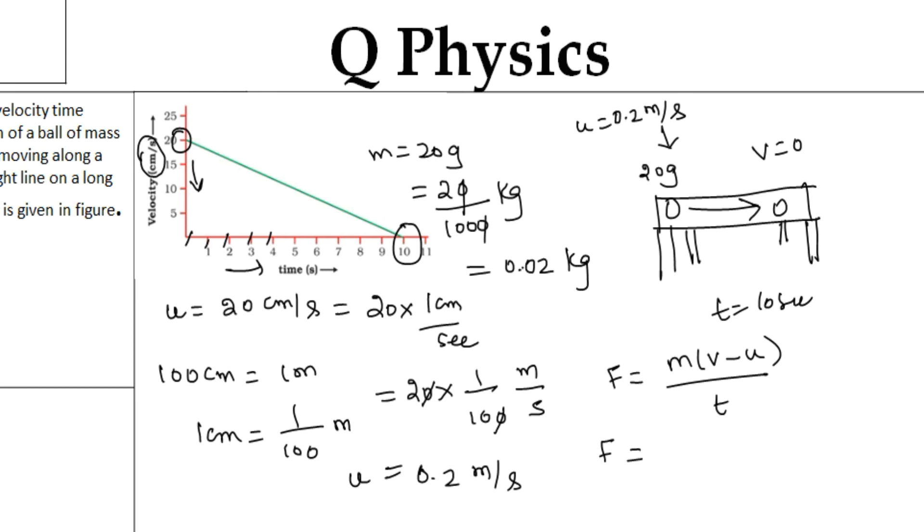So 0.02, and the final velocity will be equal to 0, and the initial velocity will be equal to 0.2, and that is divided by a time of 10 seconds. If we simplify this, this will be equal to 0.02 times minus 0.2. If we multiply this, I am going to get minus 0.0004 newtons.